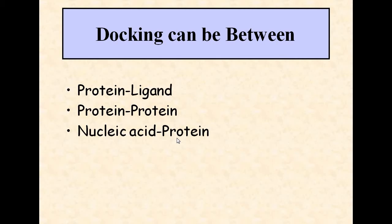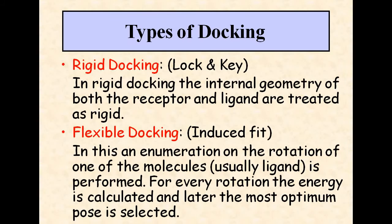The third type of docking is between nucleic acids and proteins. It can be used to understand biological processes like replication, transcription, RNA splicing, degradation of nucleic acids, and protein synthesis, which is also known as translation.